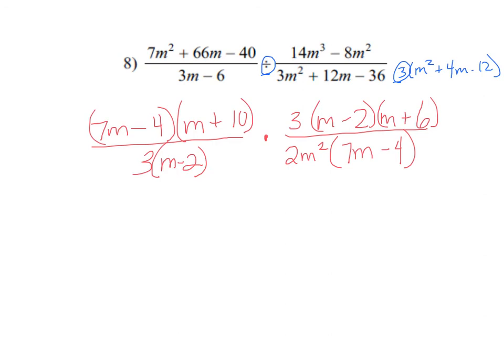Depending on where that 3 is, you might not see that this m-2 and this m-2 cancel out. I got a 7m-4. Those cancel. I got a 3 and a 3. I think that's all I have.